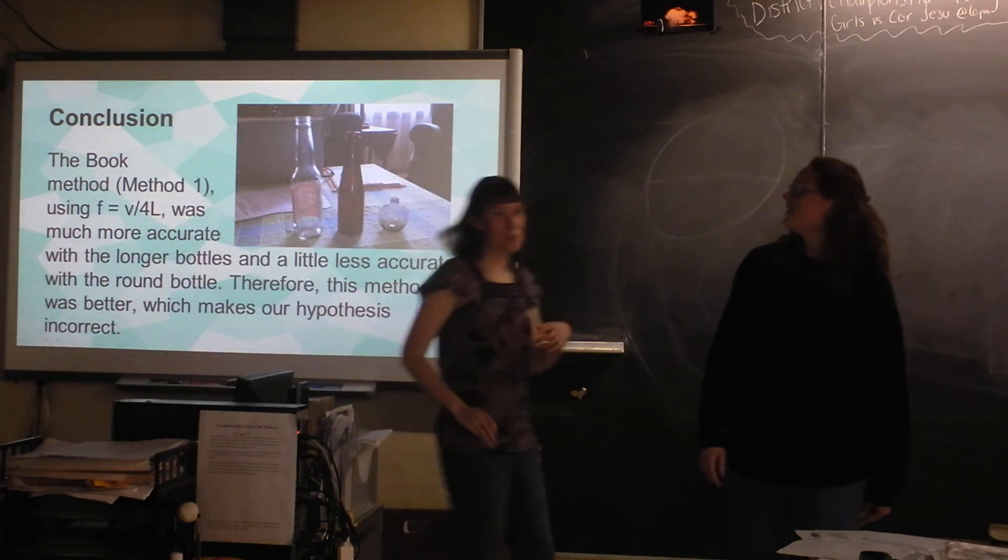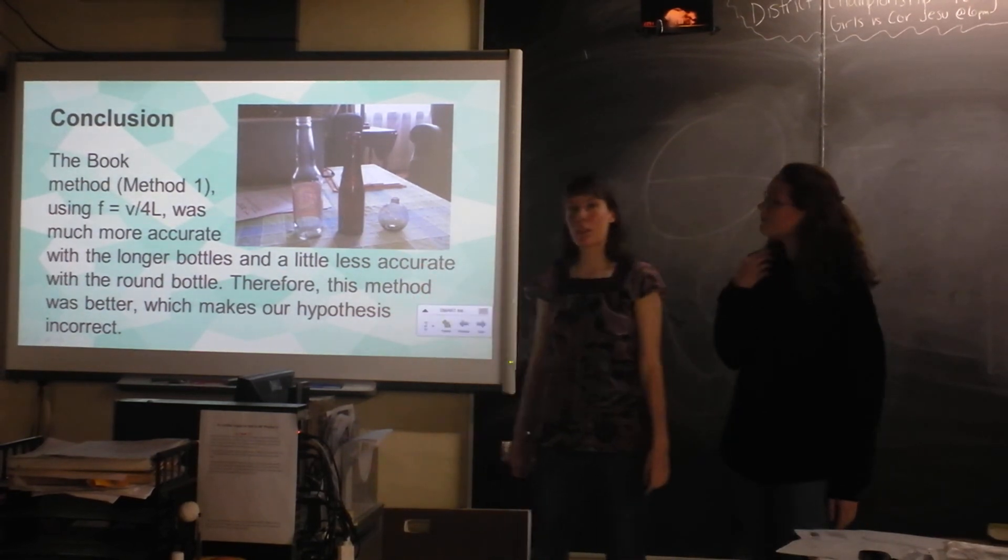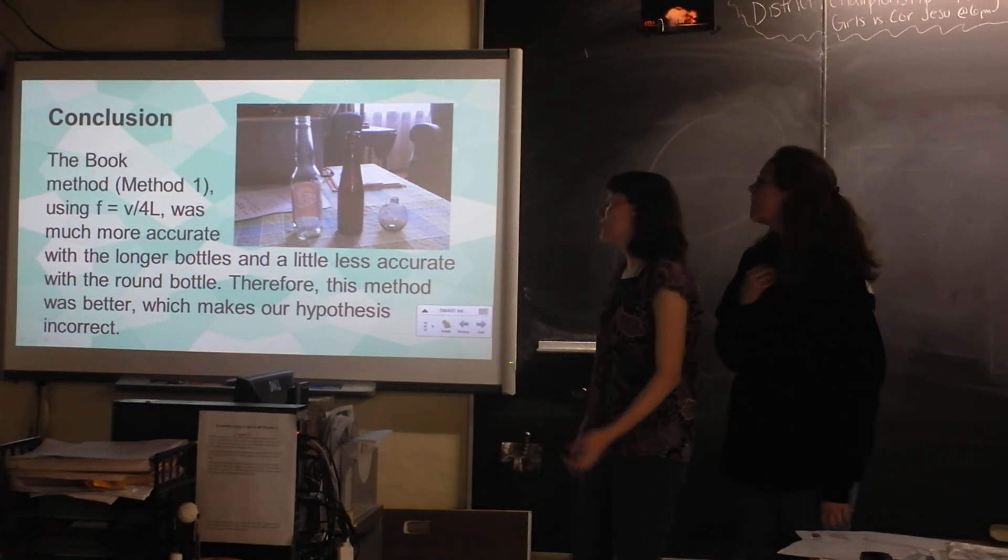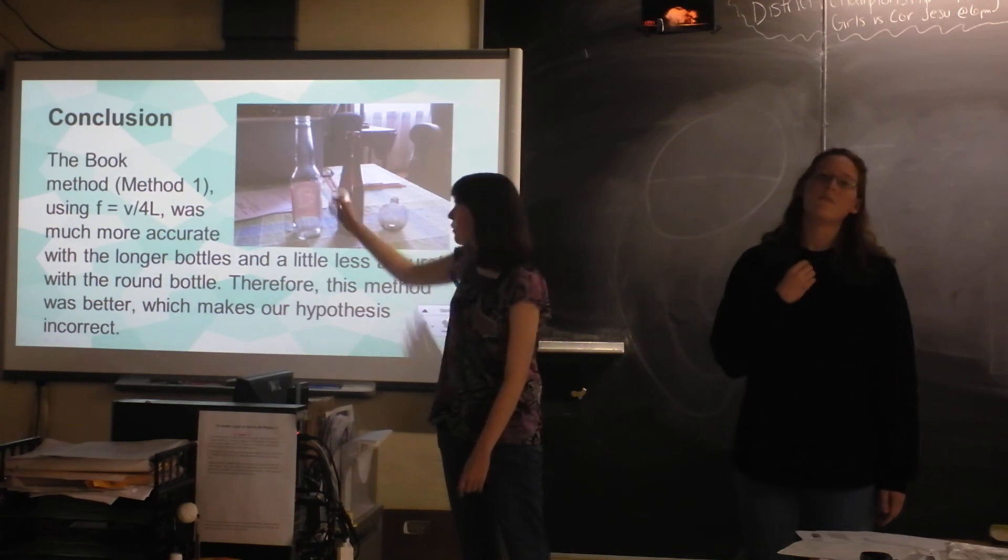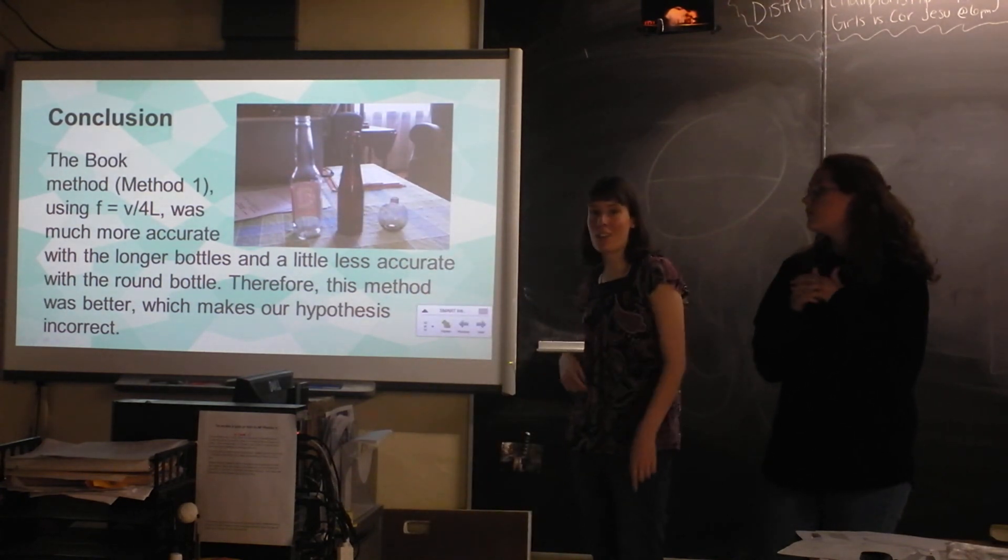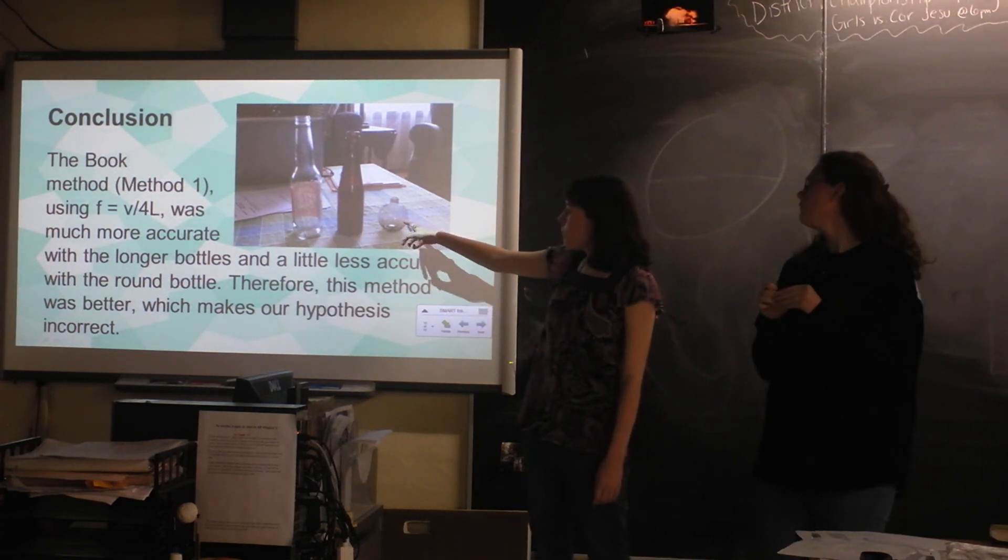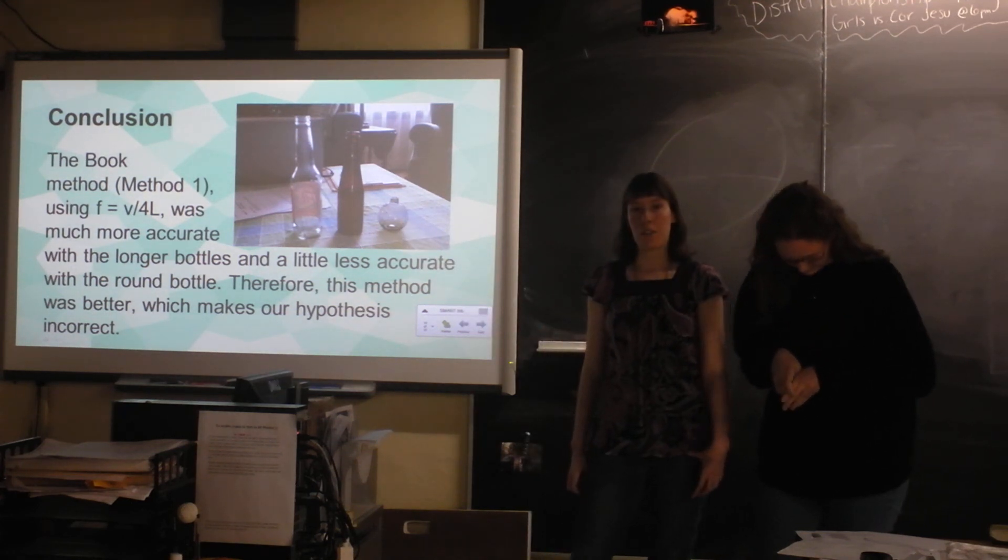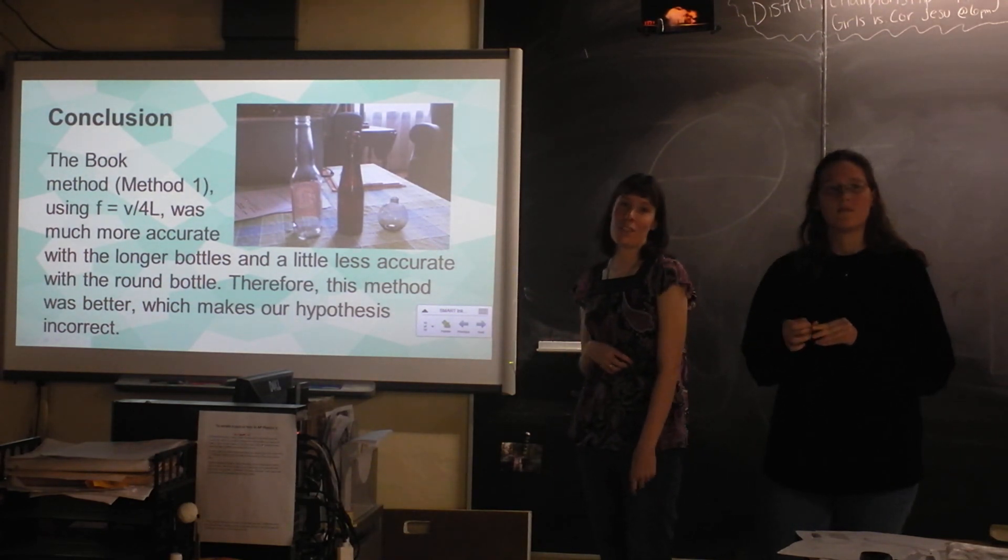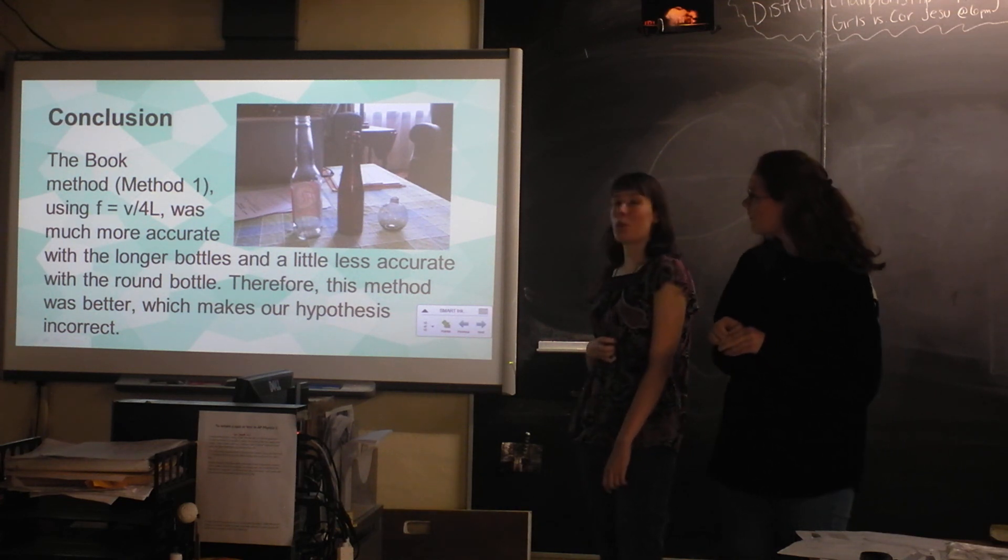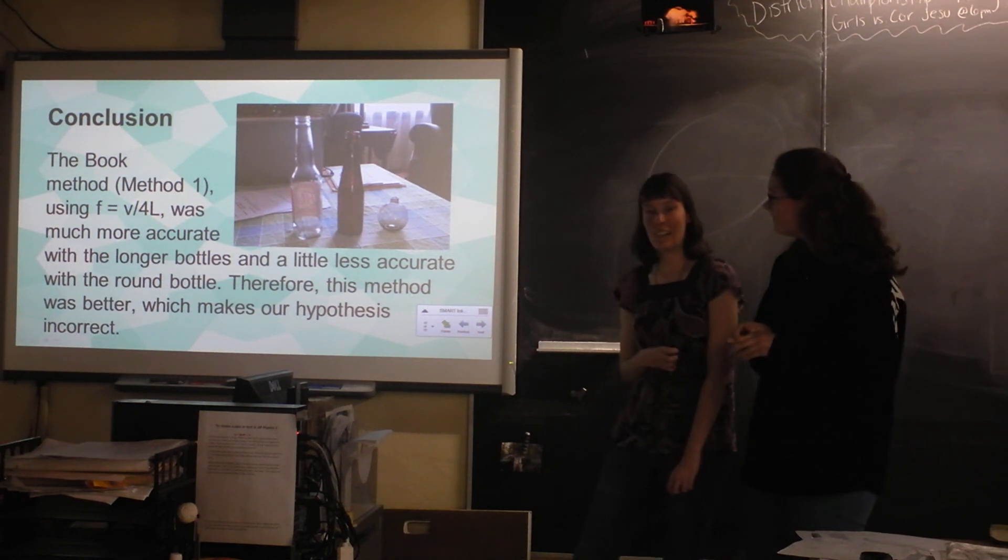And that's our conclusion, our hypothesis was incorrect, because for these two bottles, the book method was a lot more accurate. And that might be because, where does the neck end here? We did it from here, but it might have been from there that we were supposed to do it from, and the radius was changing throughout, and we had to use the radius of the neck. So the book method was a lot more accurate for those. But for this one, the Helmholtz resonance method was actually more accurate, but just a little bit. But that is the ideal bottle for that, where the neck is simple, and so that worked better there. But for just any bottle, the book method actually works better, which surprised us. It's simple.